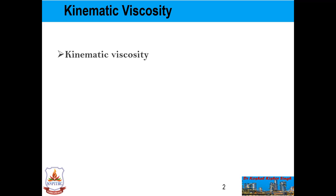So now we will see kinematic viscosity. In MKS and SI systems, the unit of kinematic viscosity is meter square per second. While in CGS units it is written as centimeter square per second. We have discussed the detailed definition in the previous lecture. Kinematic viscosity is just the ratio of dynamic viscosity divided by the density of that particular fluid.